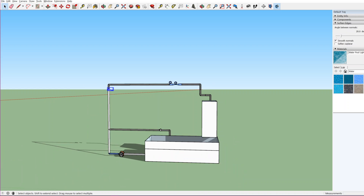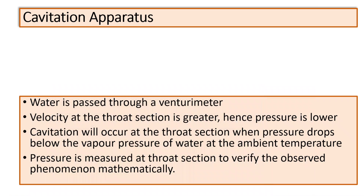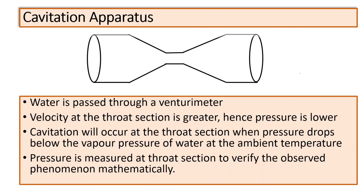What we will do is let water flow through the apparatus, and the velocity at the throat section will increase, and therefore pressure will decrease, and cavitation will occur at the throat section. When pressure drops below the vapor pressure, the pressure at that section will be measured using this pressure gauge.